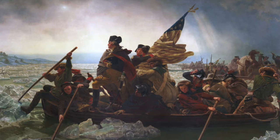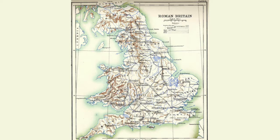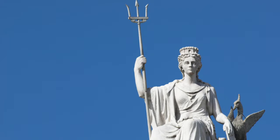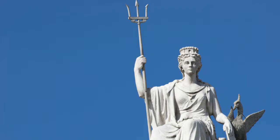But how did British law and government begin? A diverse group of tribes inhabited Britain before the Roman invasion of 43 AD. The Romans occupied England until roughly 410 AD, ruling an area they called Britannia, which was divided into four provinces, each of which was administered by a governor.